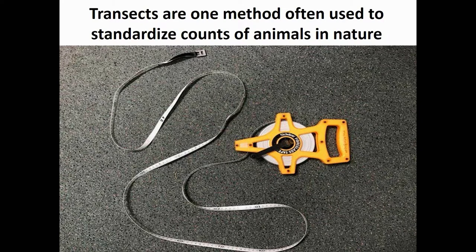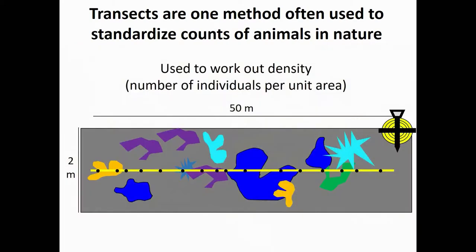Transects are one method we use to standardize counts of animals in nature, and you can see a standard transect tape here in this image. The way this works is we roll the tape out in the area we're trying to sample, whether it's a forest or a coral reef, and lay it along the substratum to measure the number of individuals in that unit of area.